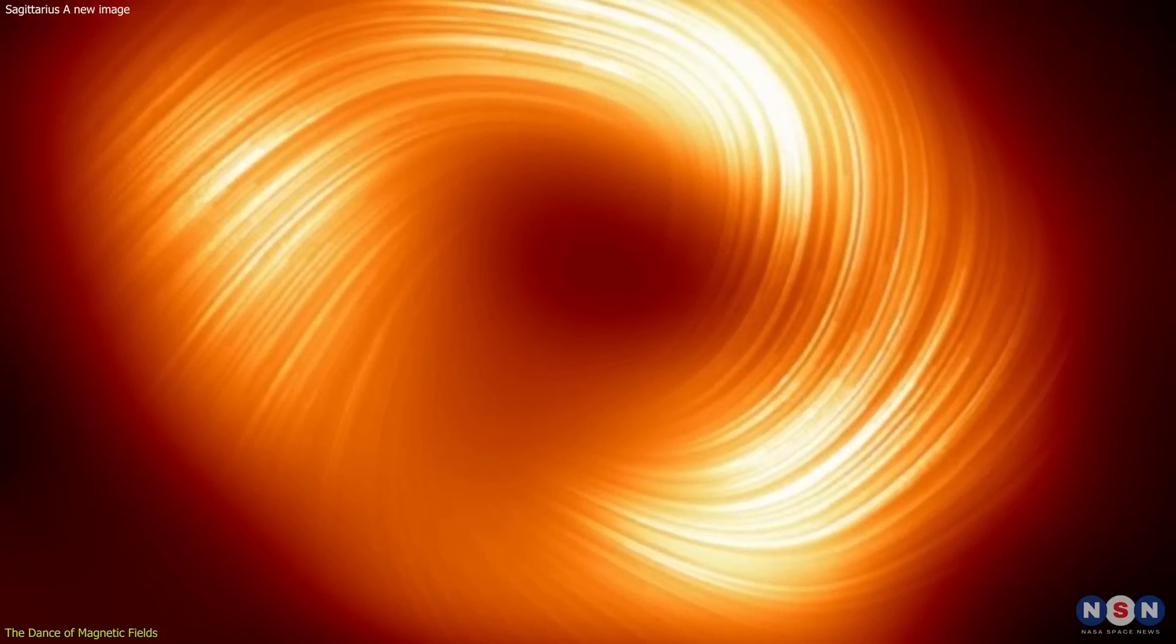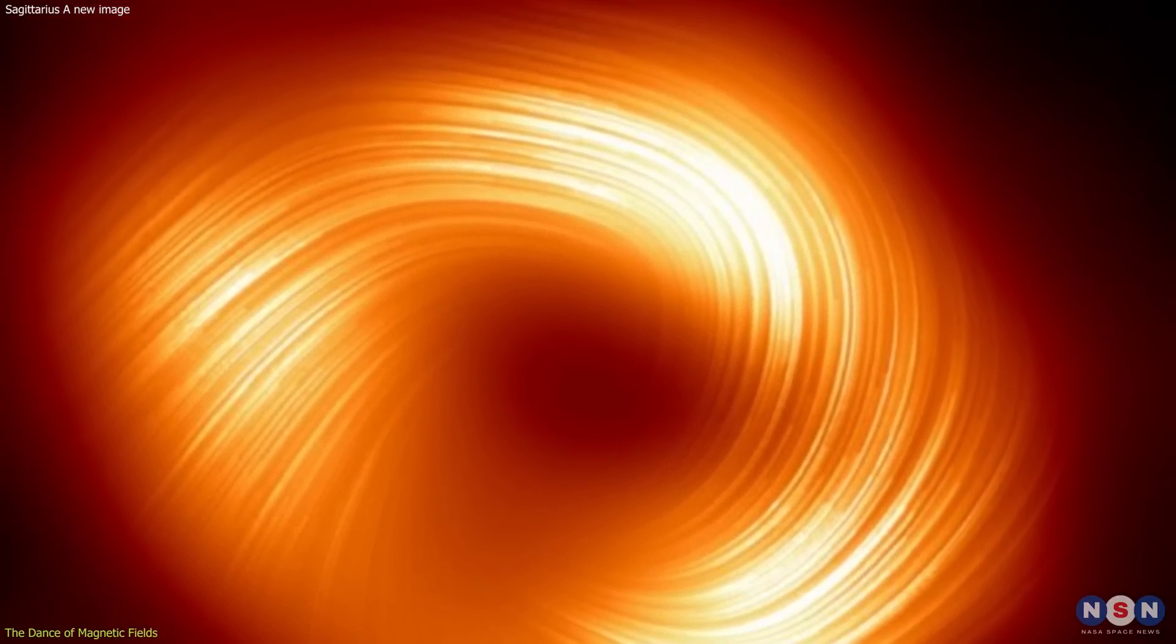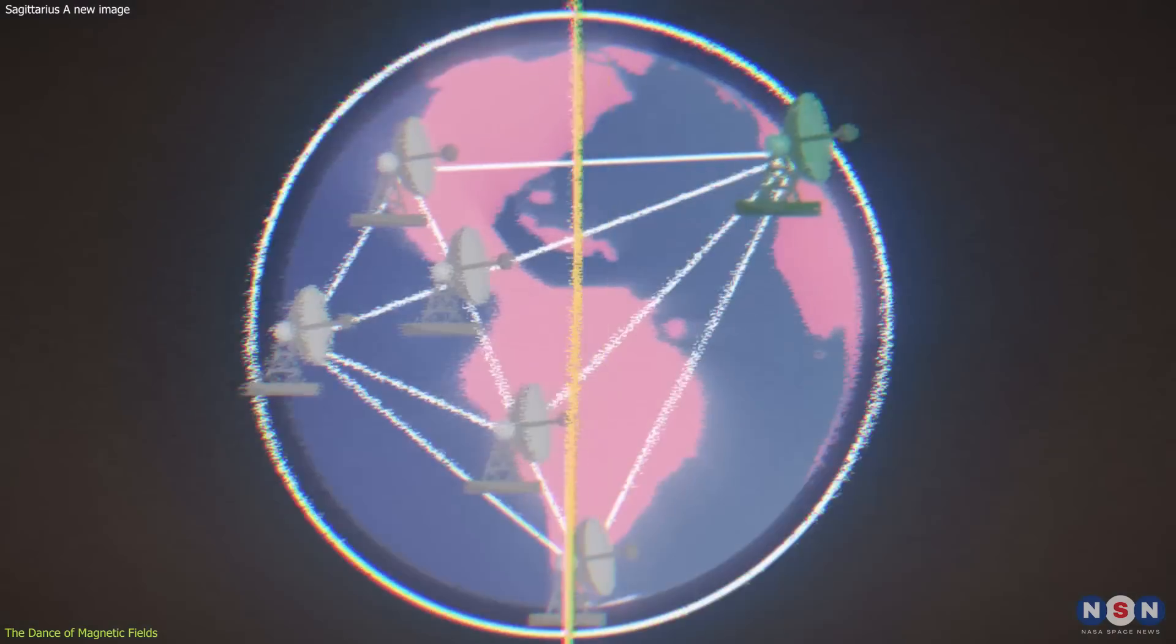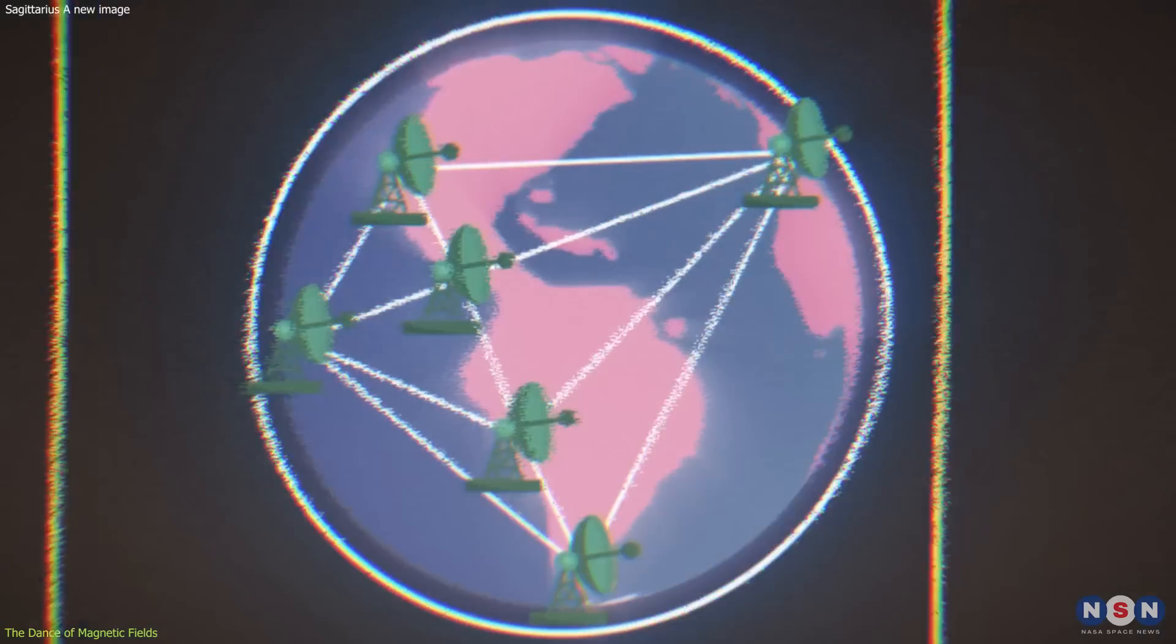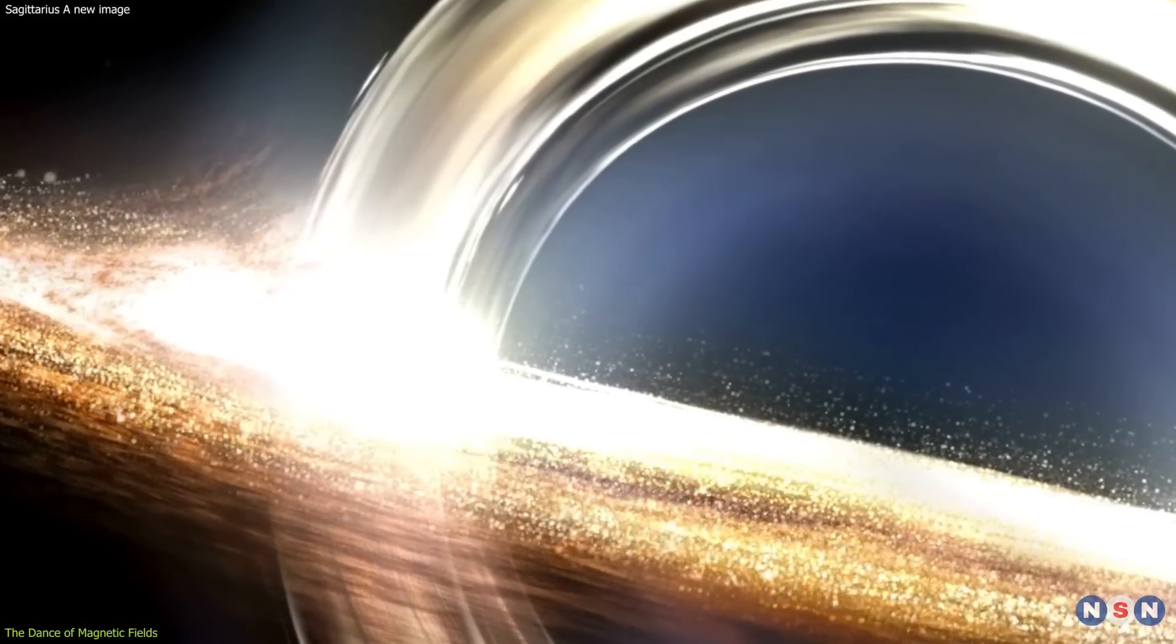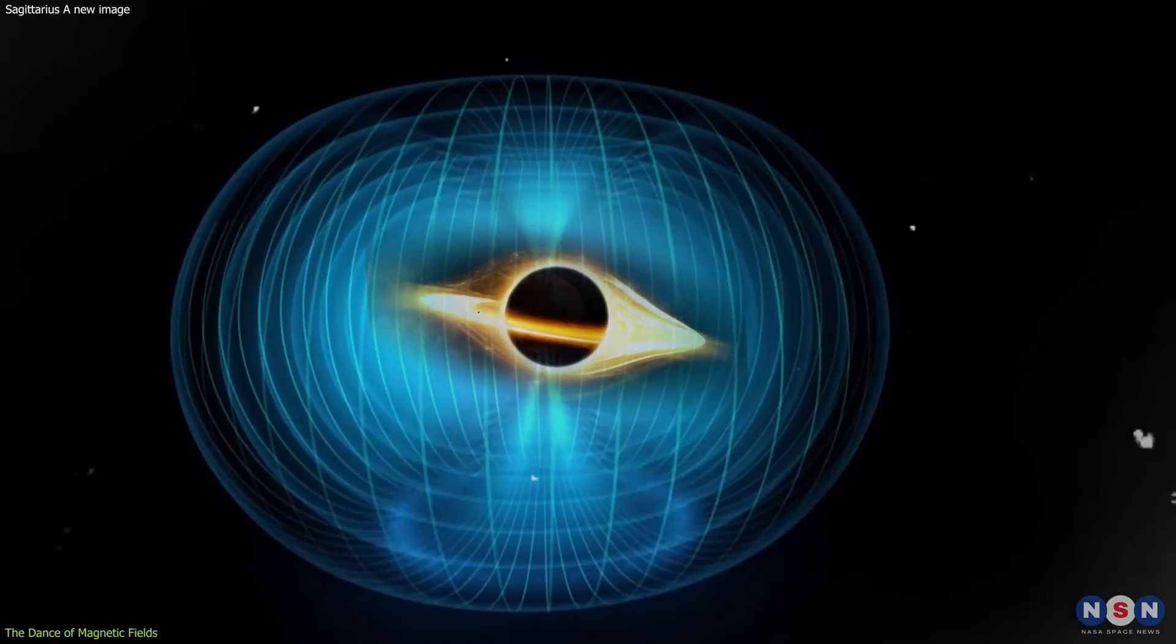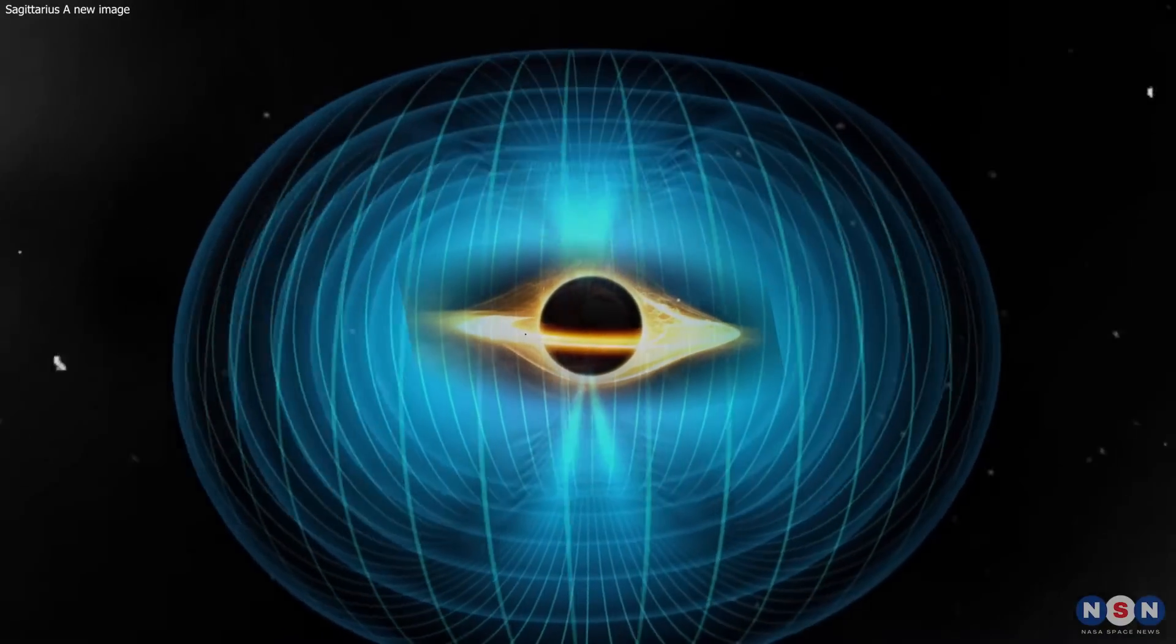The dance of magnetic fields around Sagittarius A star is not a slow waltz, but a lively jig. The telescope observed fluctuations in the magnetic field structure on time scales as short as 15 minutes. This indicates that the region near the black hole is a constantly changing environment, with magnetic fields twisting and reconfiguring at a rapid pace.